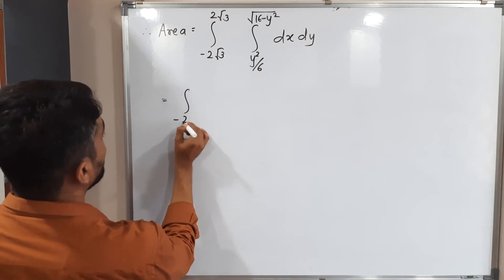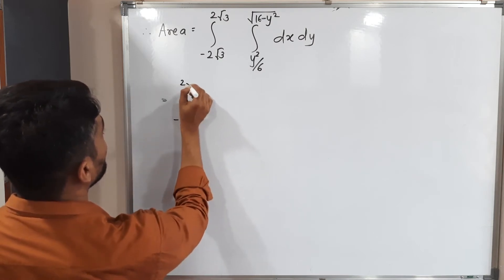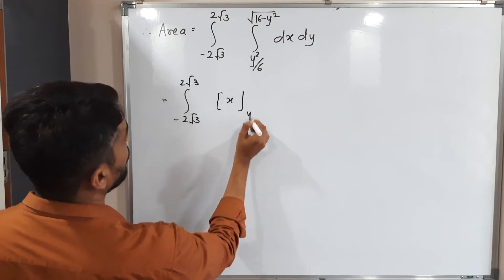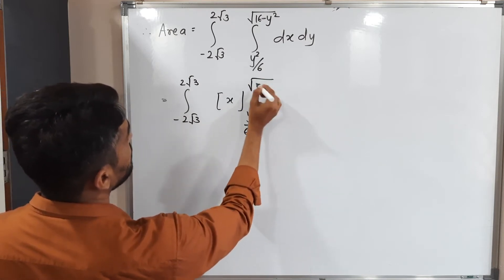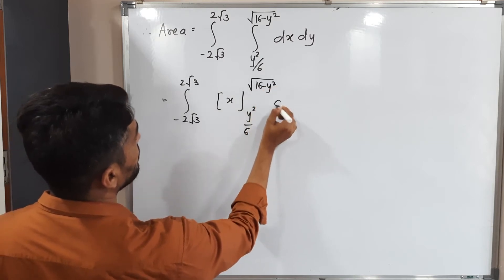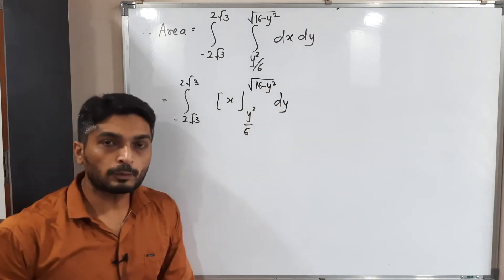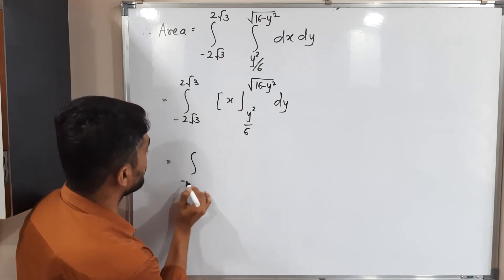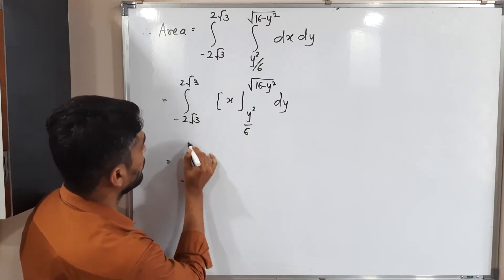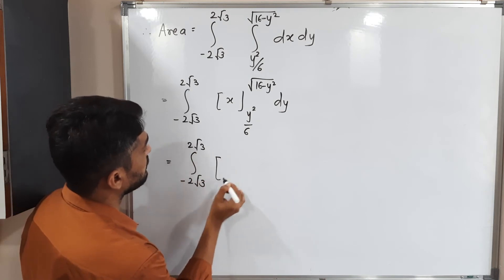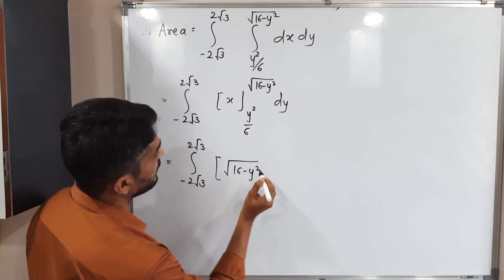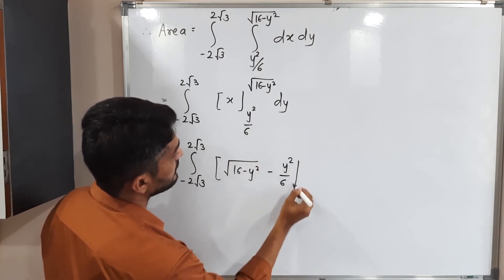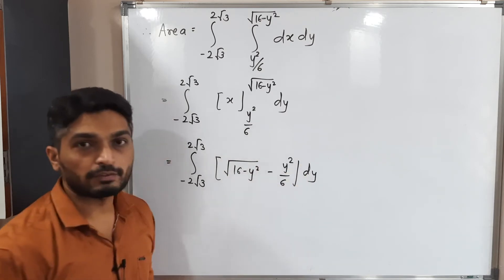We use dx dy since our strip is parallel to the x-axis. The integral is: ∫ from -2√3 to 2√3 ∫ from y²/6 to √(16-y²) dx dy. Integrating dx gives x evaluated from y²/6 to √(16-y²), yielding ∫ from -2√3 to 2√3 [√(16-y²) - y²/6] dy.